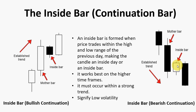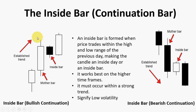The inside bar works best on a higher time frame and it must also occur within a strong trend. What does this actually signify? It tells us a period of low volatility. We have seen price in an uptrend, and when it forms an inside bar, there was low volatility on that day. If you look at the Average True Range (ATR) of this bar, it is lower than the high minus low of the mother candle. After the low volatility period ends, we continue with the prior trend. Similarly, after low volatility, the trend continues.